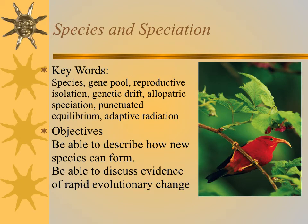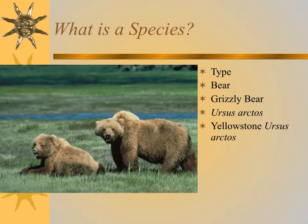There's a nice section in Chapter 18 on species and speciation. We're going to describe how new species can form and how speciation occurs. Before that, I want to talk about what is a species. We all hear the word, but it has specific biological definitions. It's a type of organism — in this case, there's a picture of a grizzly bear. The scientific name is Ursus arctus, and that's what we refer to it biologically.